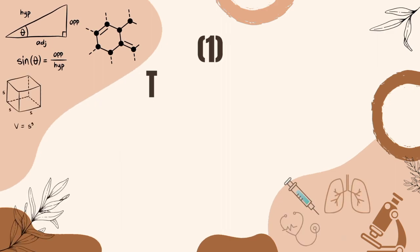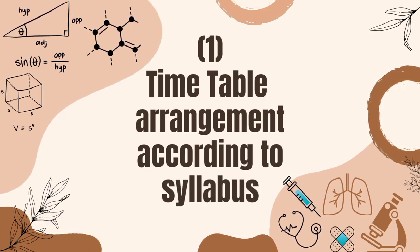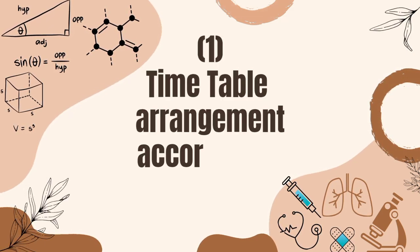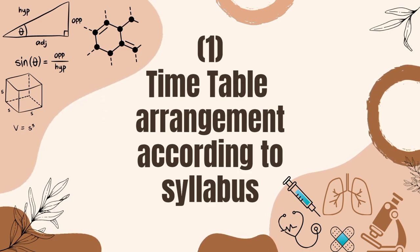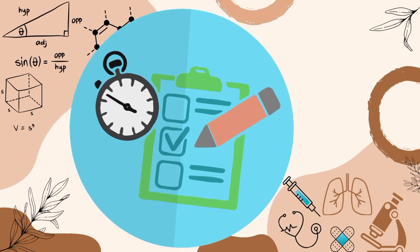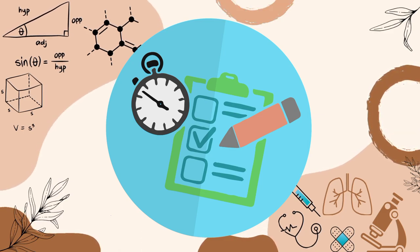Mistake number one is that students don't arrange their timetable according to the syllabus. As you know, PMDC have come and you have to prepare completely. You have to make a timetable according to your syllabus. If you don't know the limits of your syllabus, you don't know if you can complete it and you have no idea about the next task. That's why a timetable is important. You have to try to follow 95% of your timetable according to your syllabus.